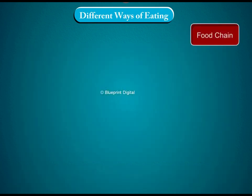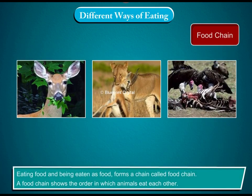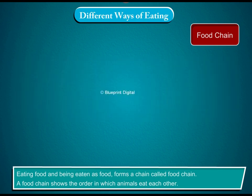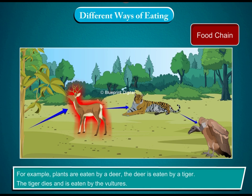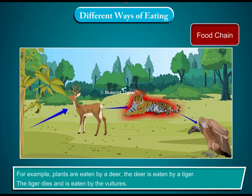Food chain. Eating food and being eaten as food forms a chain called a food chain. A food chain shows the order in which animals eat each other. For example, plants are eaten by a deer, the deer is eaten by a tiger, and the tiger dies and is eaten by the vultures.